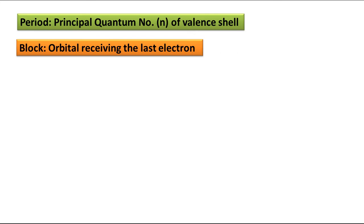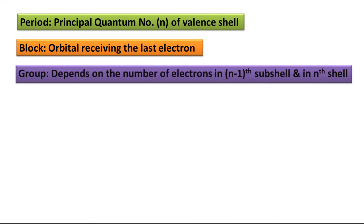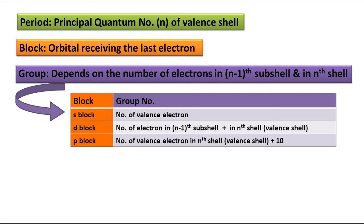What about group? For group there is no direct answer as you have seen for period and block. For groups it may depend on the number of electrons present in the (n−1) sub-shell — that means the penultimate shell — and also in the nth shell. Whether it depends on both or just one also depends on which block the element is in.